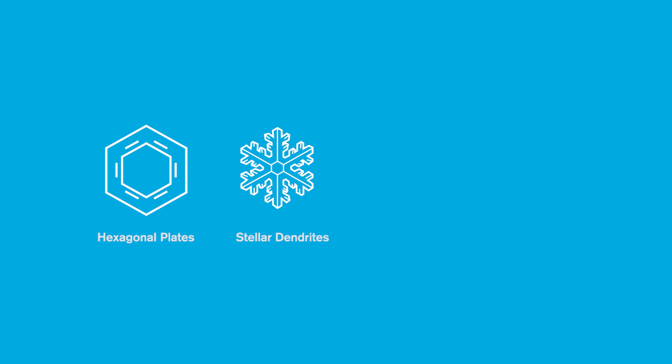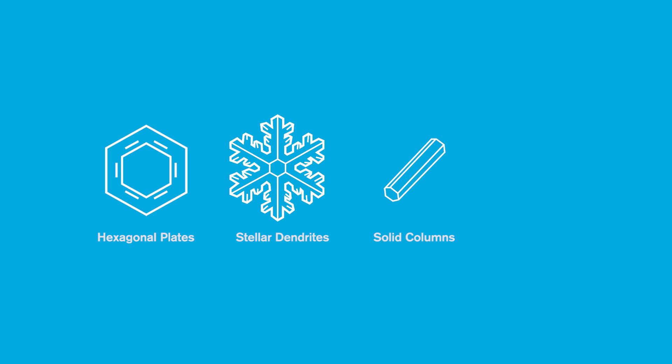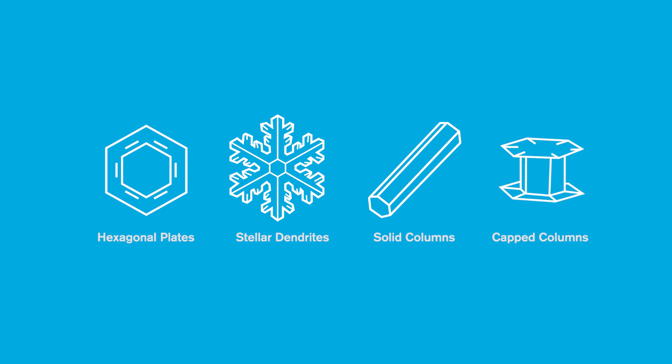There are thin plate-like crystals, there are branched crystals that are sort of the canonical snowflake shape. There are long columns like wooden pencils, six-sided but long and skinny, and then more exotic shapes like capped columns. You have a columnar crystal with two plates on either end.